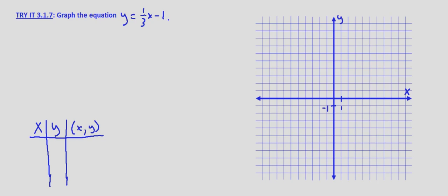So let's start off with, let's let x equal negative 3. If that's the case then y equals one-third times negative 3 minus 1. One-third times negative 3 is negative 1 minus 1 equals negative 2. So filling out our little table we have x equals negative 3, y equals negative 2. So our point that is on the line at x equals negative 3 is negative 3, negative 2.